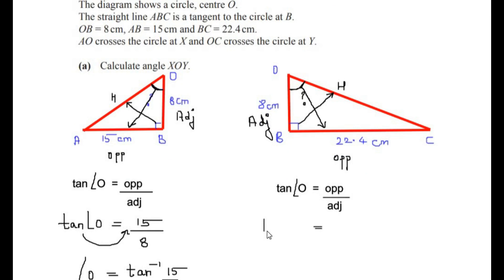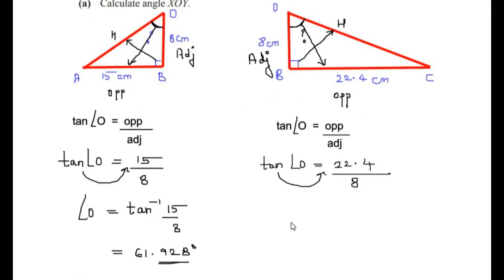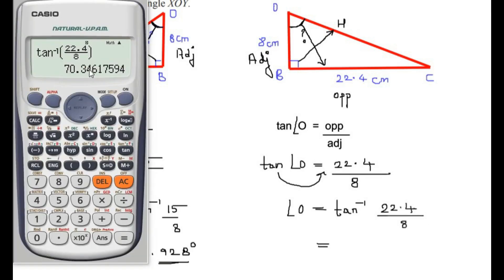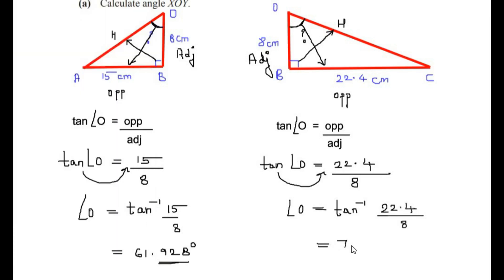So tan(O) = opposite / adjacent = 22.4 / 8. Taking the inverse, angle O = arctan(22.4/8), which gives us a value of 70.346 degrees.